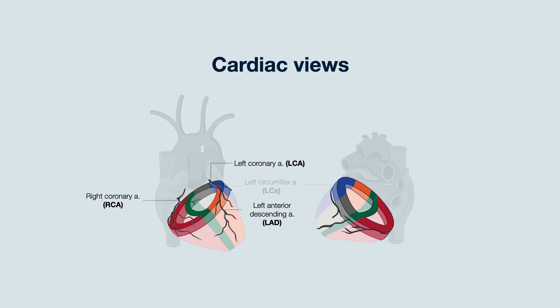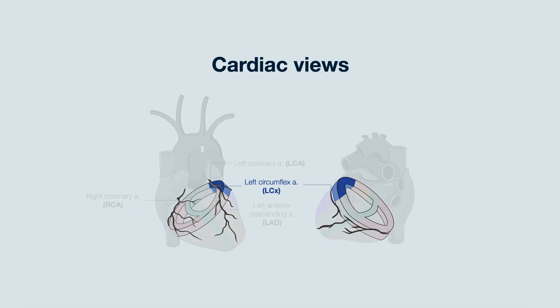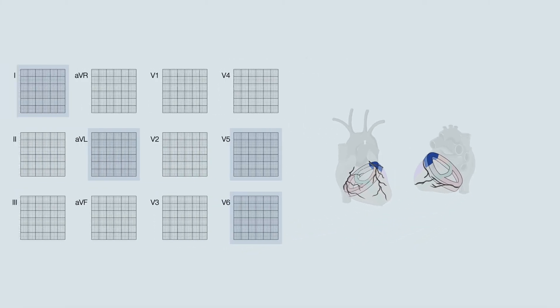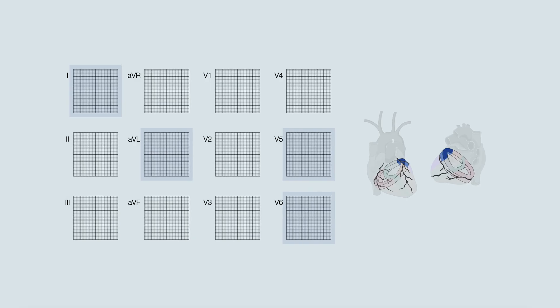So if there is vascular injury of the left circumflex, one will see changes from the lateral aspect of the heart. And on ECG, there are certain leads associated with specific cardiac views. So to identify this injury to the left circumflex artery, we would then look at the ECG leads that look at the lateral perspective.